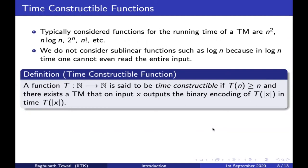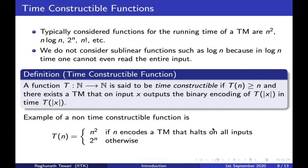What kind of functions are not time-constructible? Here is an example: define t(n) = n² if n encodes a Turing machine that halts on all inputs, and t(n) = 2^n otherwise. This function is greater than or equal to n but is not time-constructible, because checking whether n encodes a Turing machine that halts on all inputs is an undecidable problem — you cannot solve it using any Turing machine, let alone in polynomial time.